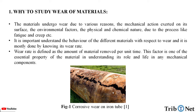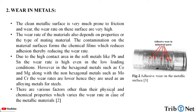Here we can see one of the examples of corrosive wear on an iron tube. Wear in metals: the clean metallic surface is very much prone to friction and wear, and the wear rate on these surfaces is very high. The wear rate also depends on the properties or the type of mating material. The contamination on the material surface forms chemical films which reduces adhesion, thereby reducing the wear rate.